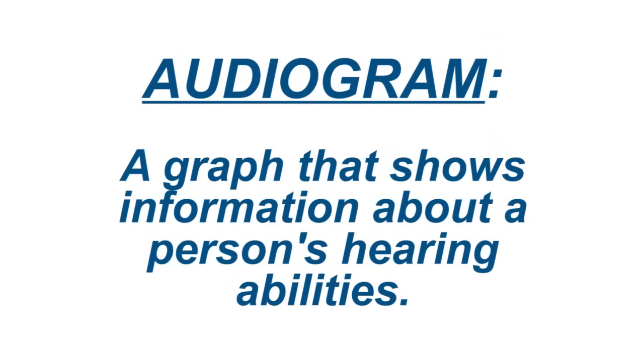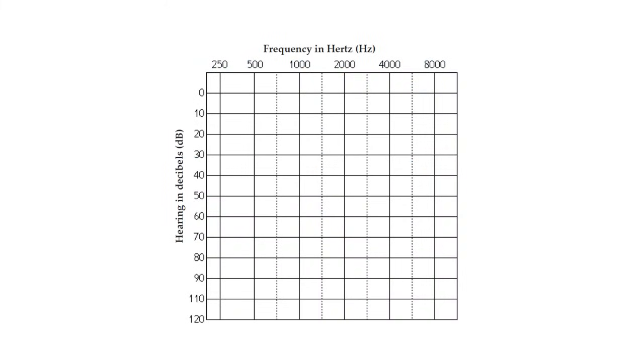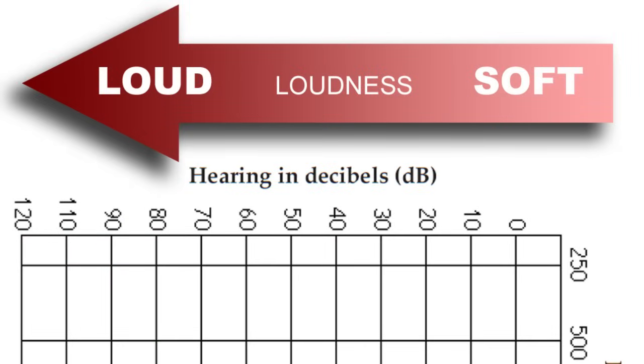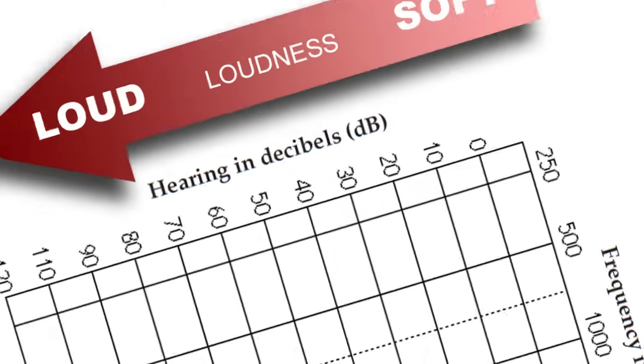Let's take a look at the various parts of the audiogram. First let's look at it from top to bottom. The audiogram measures sound intensity or loudness in decibels, which are listed from 0 decibels at the top to 120 decibels at the bottom.